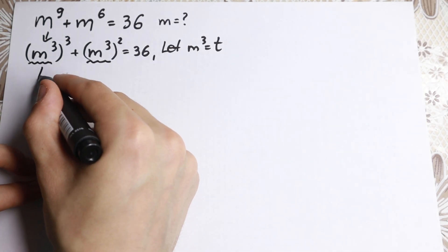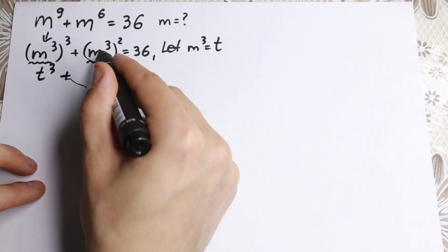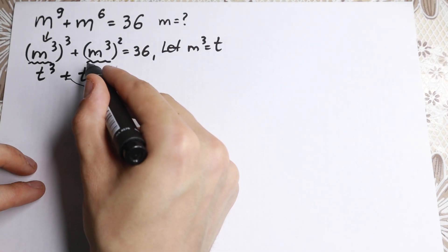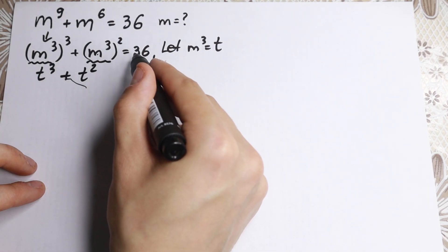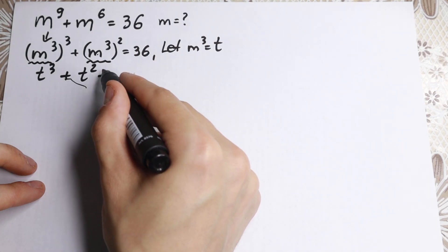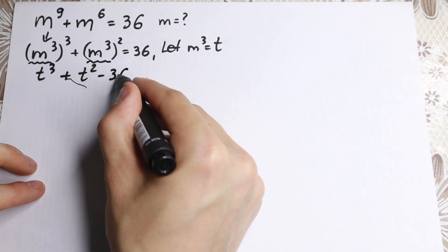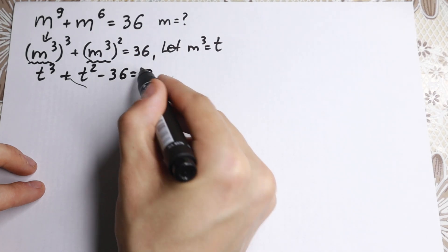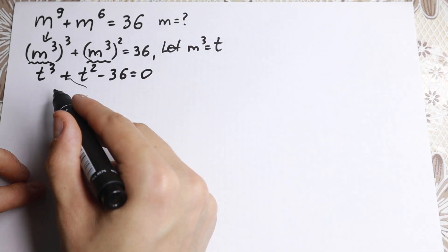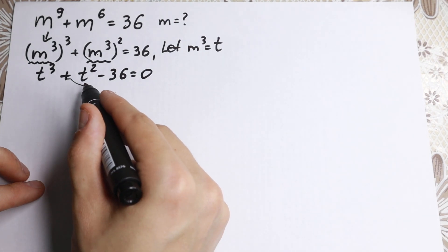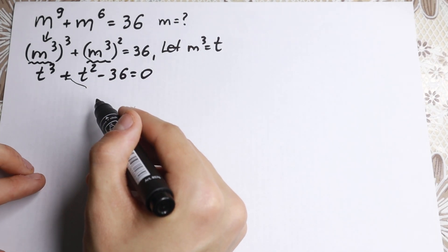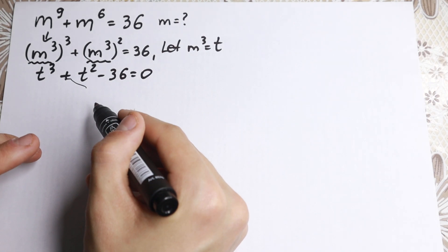With that substitution, we'll have t-cubed plus t-squared. Bringing 36 to the left gives us minus 36 equal to 0. So we have the cubic equation: t³ + t² − 36 = 0.